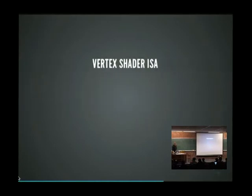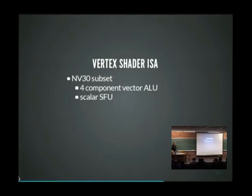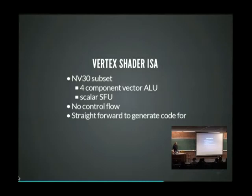The vertex shader instruction set is basically a subset of the NV30, which means it can do four-component vectors for normal ALU instructions, or single-component scalar SFU instructions, and it seems able to do those in parallel - although I've never seen the compiler generate that. There is no control flow, so all loops need to be unrolled. But it's very straightforward to generate code for - it looks basically exactly like TGSI.